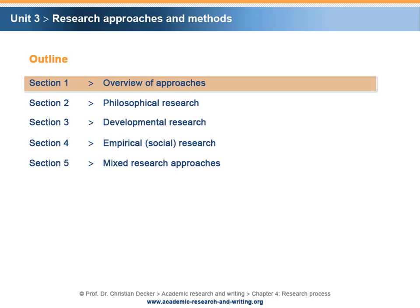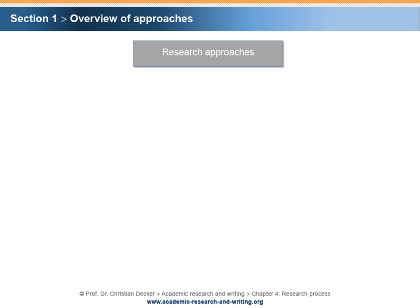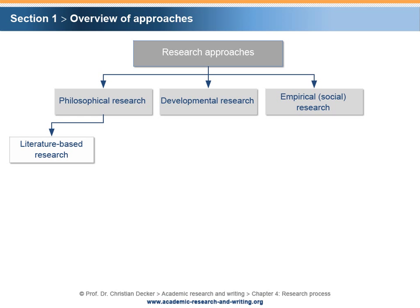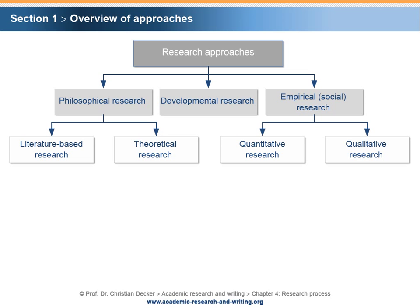Section 1 – Overview of Approaches. In academic work, there are different research approaches. At a glance, it can be distinguished between three main research approaches: philosophical research, developmental research, and empirical or social research. Philosophical research can be specified as literature-based research and theoretical research, whereas empirical research can be divided into quantitative and qualitative research.